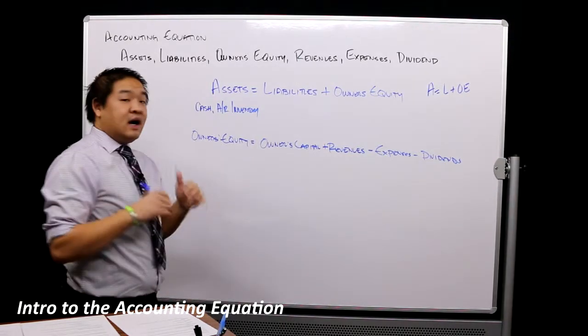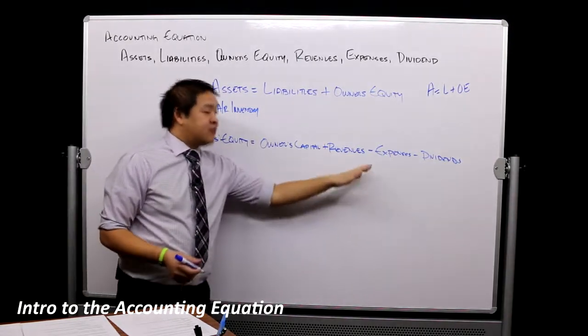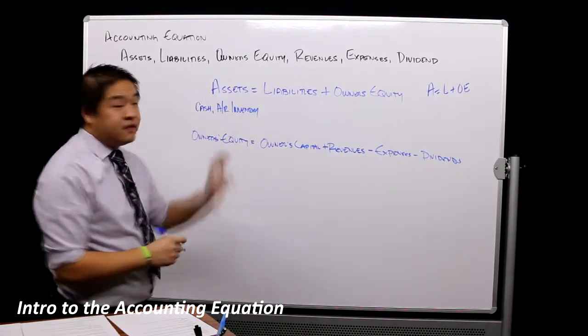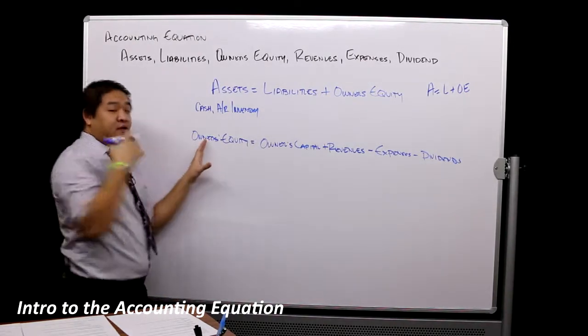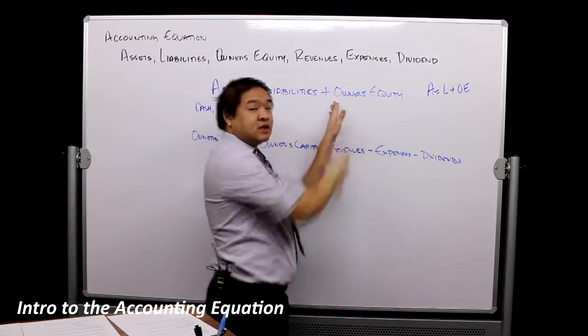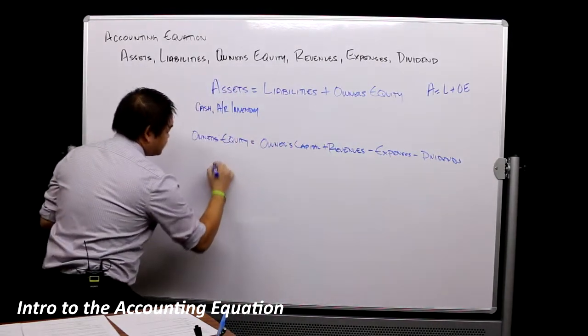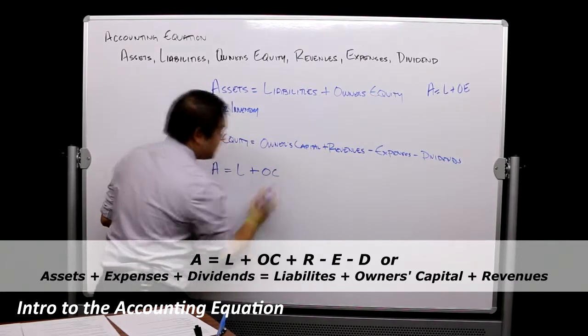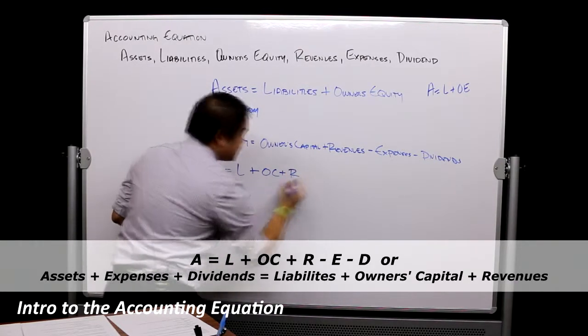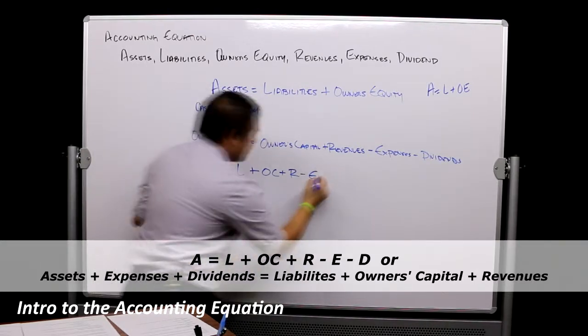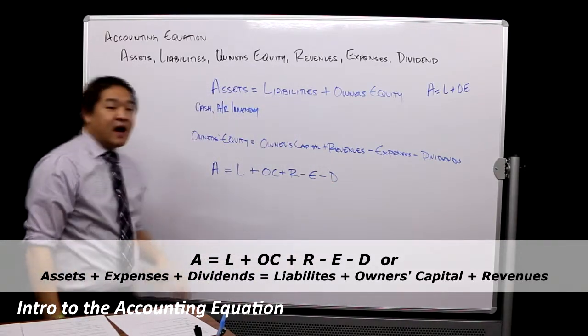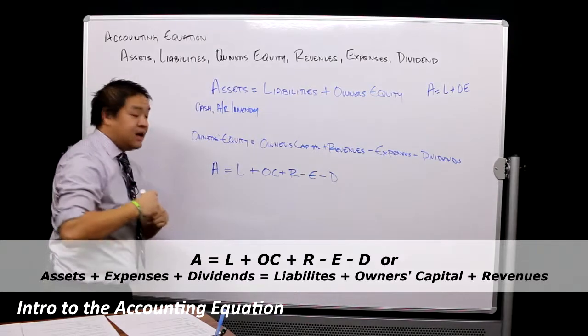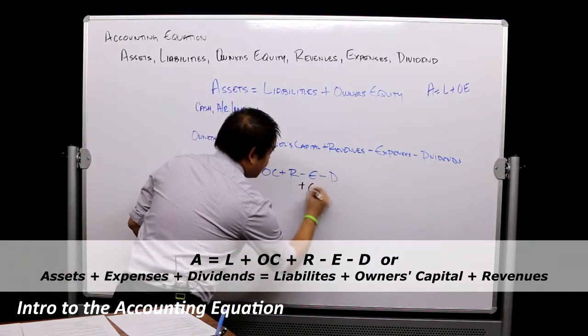Owner's equity can be thought of as owner's capital plus revenues minus expenses minus dividends. Here is where we get to the real expanded equation. I'm going to use abbreviations. From algebra, we can put this into the equation, so we get A = L + (OC + R - E - D). If you're like me, I don't like the negative signs, so we're going to take those away by adding each item to both sides.